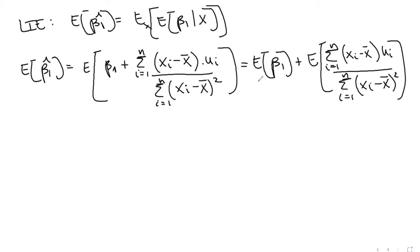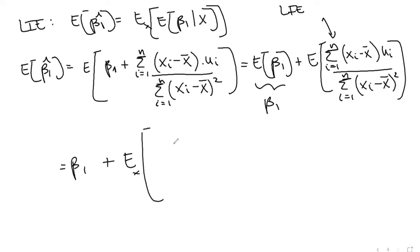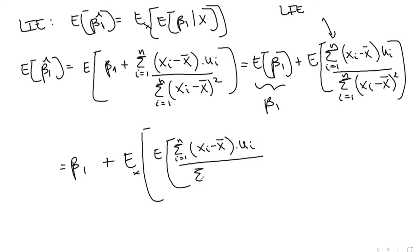We can't just substitute the expectation into uᵢ directly — that's a temptation to avoid. Instead, we apply the law of iterated expectations: E[β̂₁] = β₁ plus E[E[(sum of (xᵢ minus x̄)·uᵢ divided by sum of (xᵢ minus x̄)²) | x]].